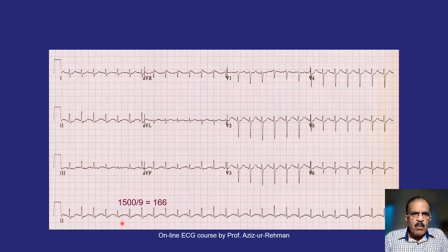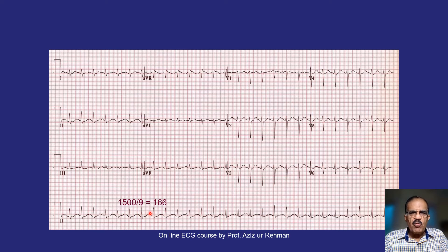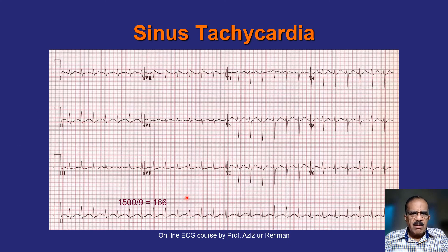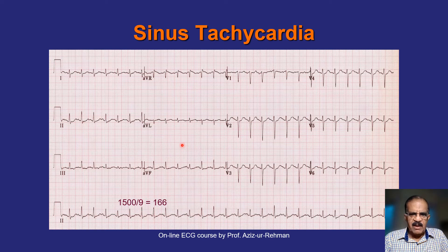The RR intervals are regular with nine small squares between adjacent R waves. Using the formula 1500 divided by 9, the heart rate is 166 beats per minute. Since 1500 is the number of small squares per minute, this gives us the rate per minute. The heart rate is clearly more than 150. With visible P waves and narrow complexes, this is sinus tachycardia — possibly due to high fever, hyperthyroidism, or anxiety.